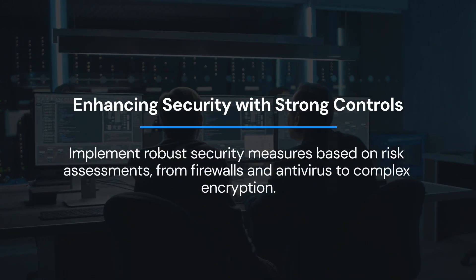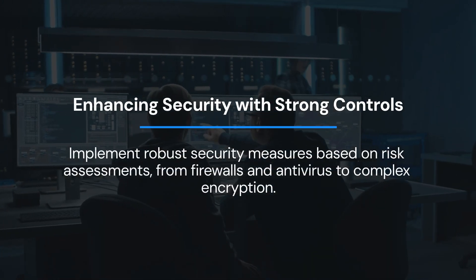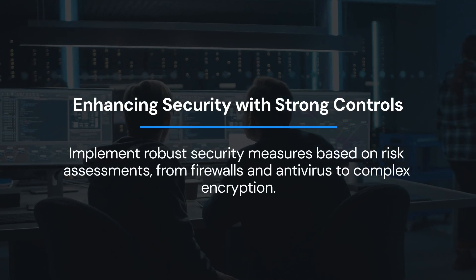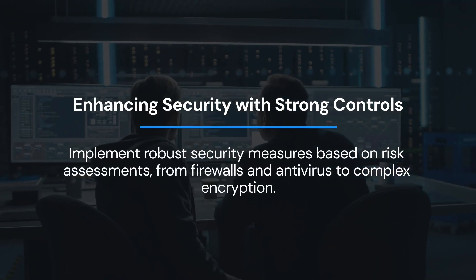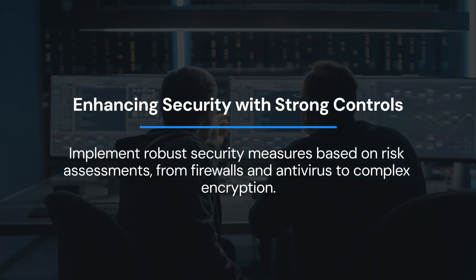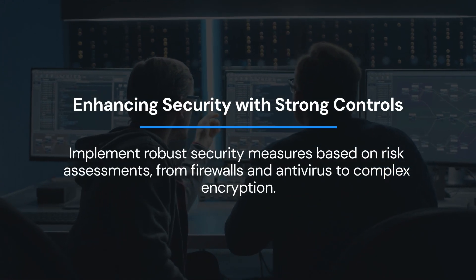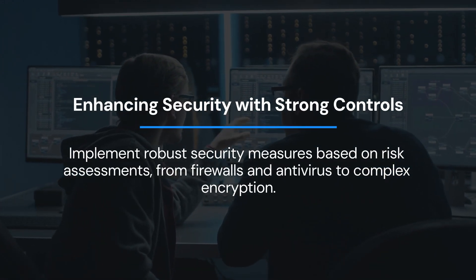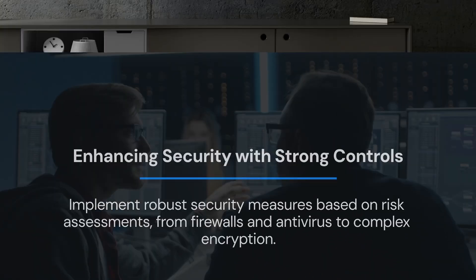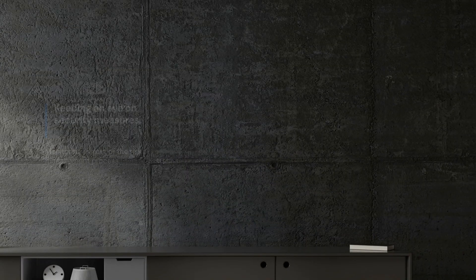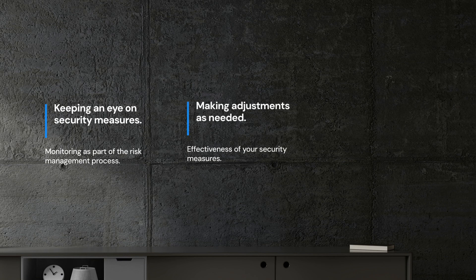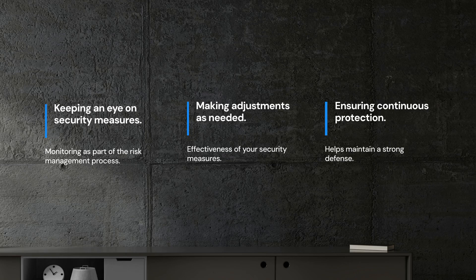Implementing strong security controls based on your risk assessment findings is next. This could range from simple solutions like firewalls and antivirus software to complex encryption methods. Monitoring is also part of the risk management process — keeping an eye on the effectiveness of your security measures and making adjustments as needed helps maintain a strong defence.